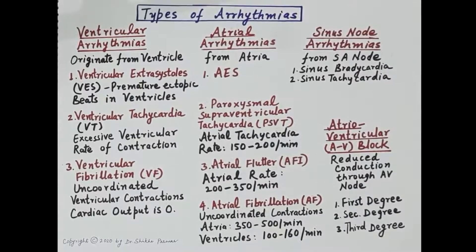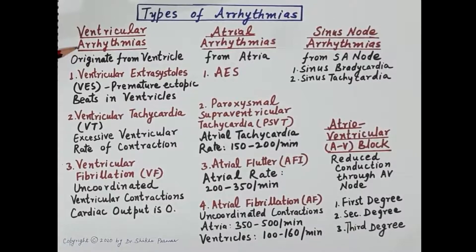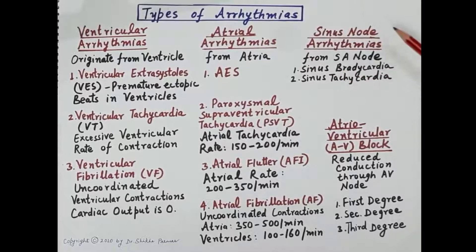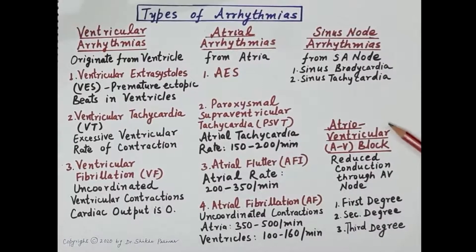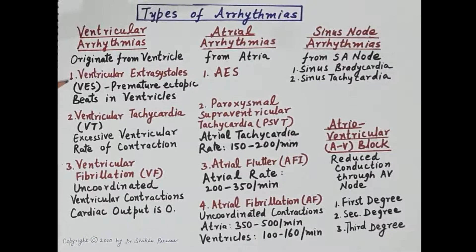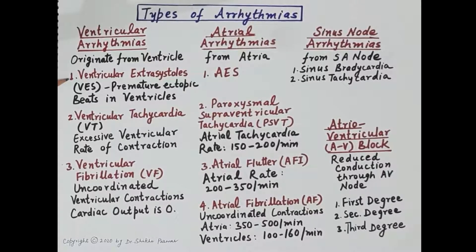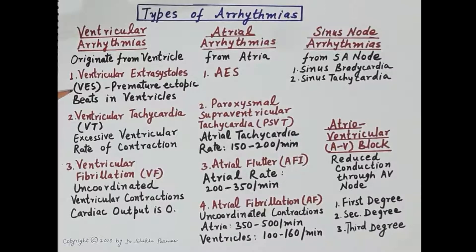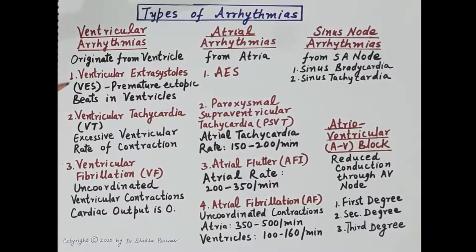There are different types of arrhythmias. Ventricular arrhythmias originate from the ventricle; atrial arrhythmias originate from the atria; sinus node arrhythmias originate from the SA node; and atrioventricular block (AV block) is caused by excessive vagal stimulation. Ventricular arrhythmias include: ventricular extrasystoles (premature ectopic beats due to early or delayed after depolarization), ventricular tachycardia (ventricular rate more than 100 times per minute), and ventricular fibrillation (uncoordinated ventricular contractions — an emergency because cardiac output falls to zero).